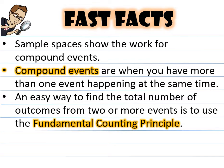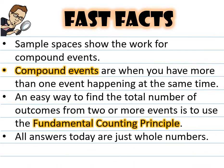An easy way to find the total number of outcomes from two or more events is to use the fundamental counting principle. All answers today are just going to be whole numbers. No fractions.